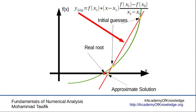Then we set y of the line equal to 0, just like the Newton Raphson method, to get an equation for a new value of x, which is the approximate solution.